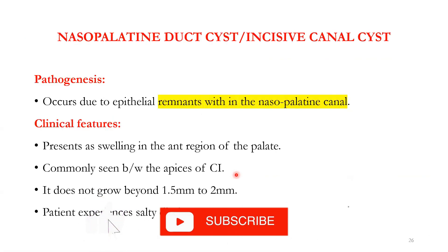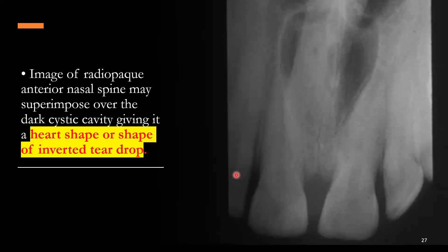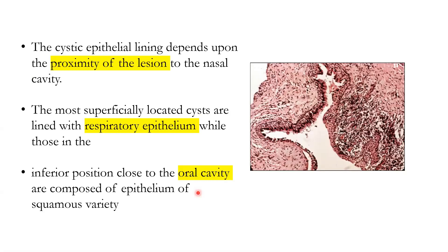The nasopalatine duct cyst, also called the incisive canal cyst, occurs when epithelial remnants are entrapped within the nasopalatine canal. It presents as a swelling in the anterior region of the palate between the apices of the central incisors and can be up to two centimeters. The patient may experience a salty discharge. The radiolucency appears heart-shaped due to superimposition of the anterior nasal spine, giving it a heart shape or inverted teardrop shape. Histopathology: same pseudostratified ciliated columnar or cuboidal epithelium.